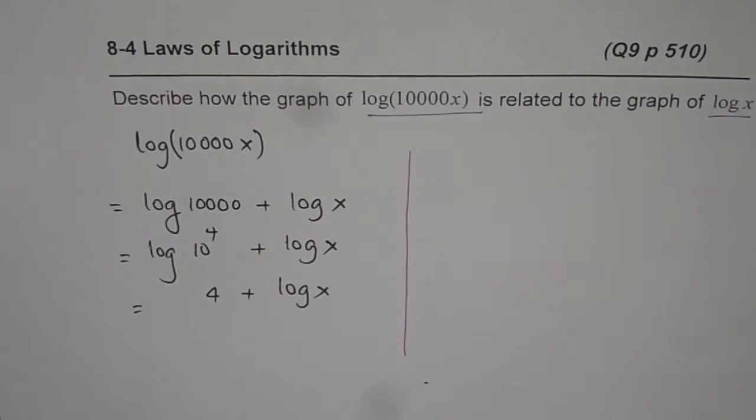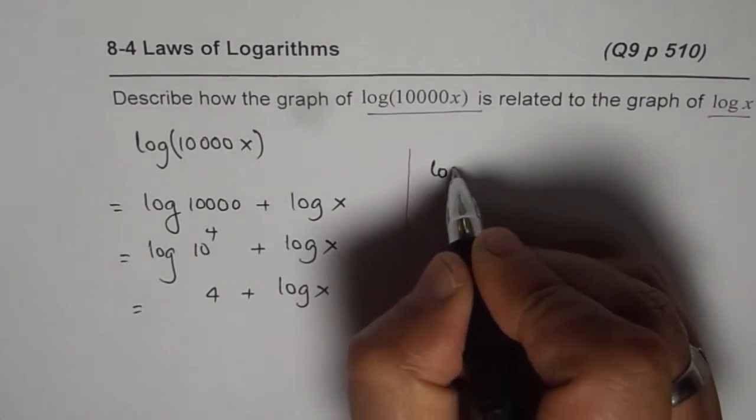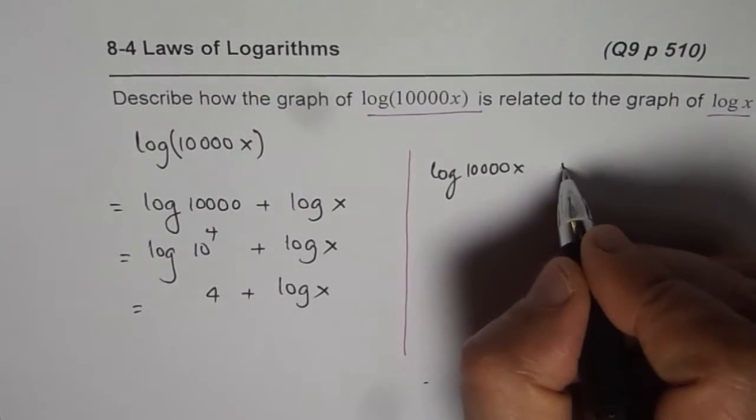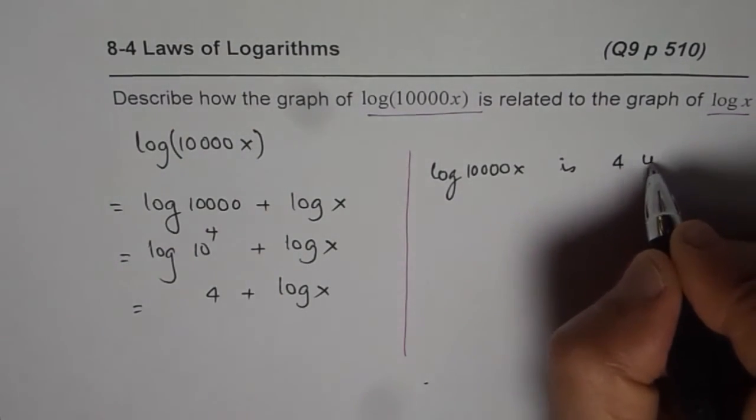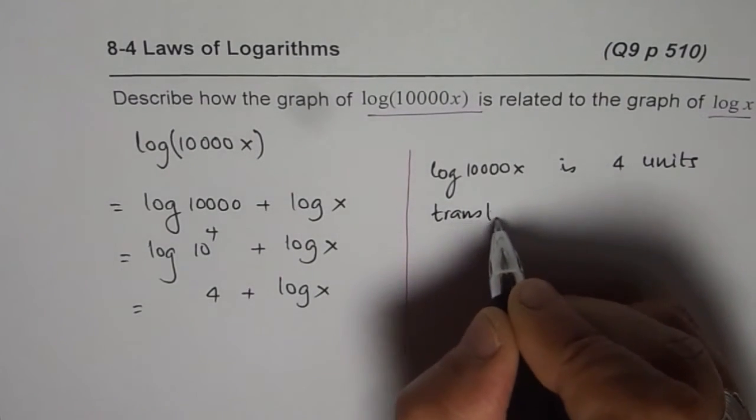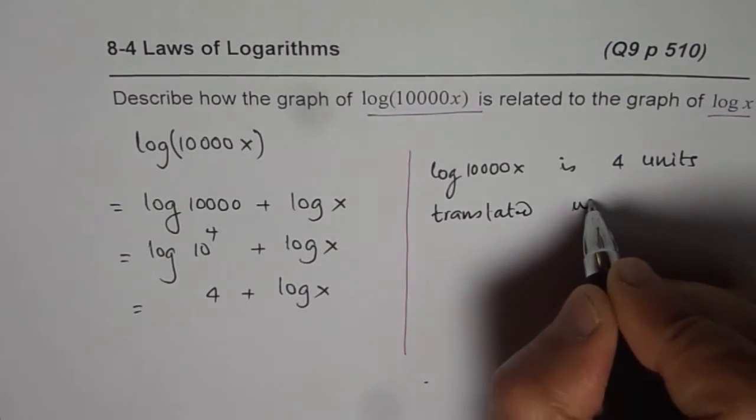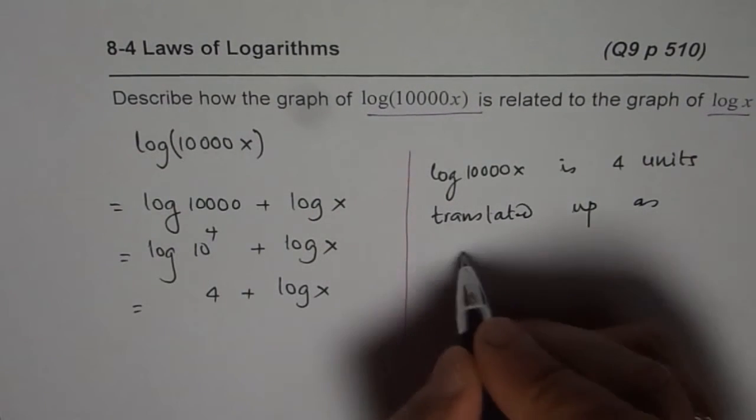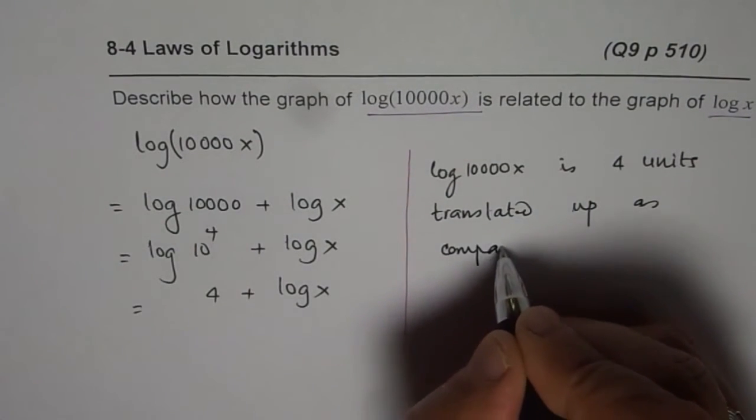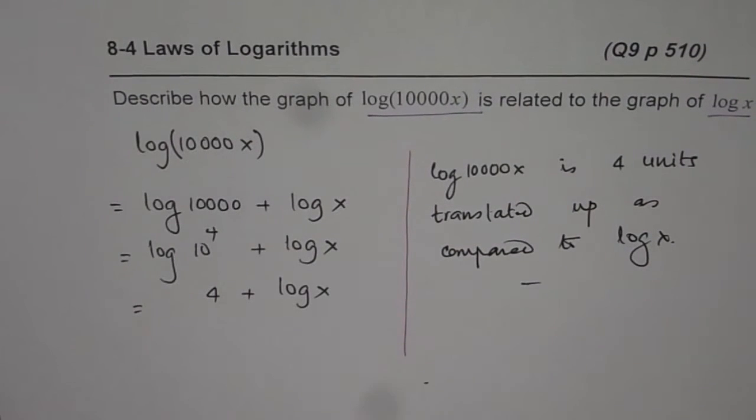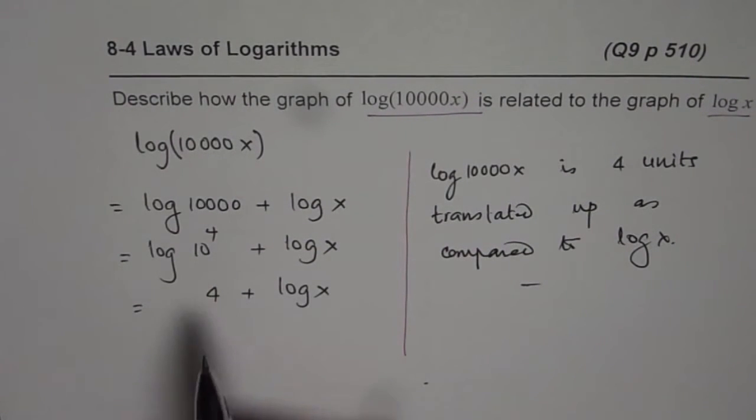So the relation is that log(10,000x) is 4 units translated up, as compared to log(x). I think that helps. So it is 4 units translated up if you see or compare the graph.